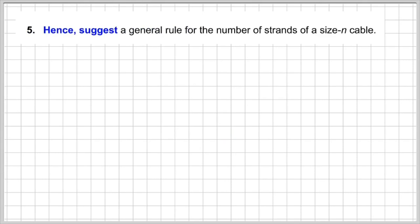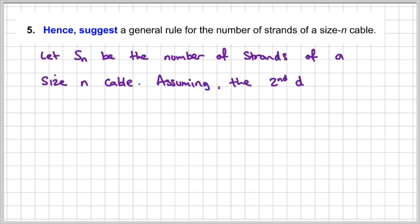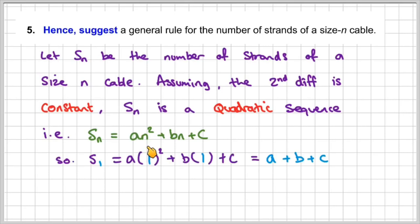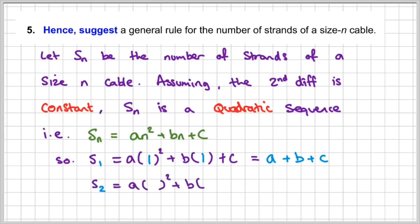Now we have to suggest a general rule for the number of strands of a size n cable. Let sn be the number of strands of a size n cable. Since the second difference is constant, sn is a quadratic sequence. Every quadratic sequence follows the formula an² plus bn plus c — the universal general formula for any quadratic sequence. When n equals 1, substituting gives a plus b plus c. Some of you use the shortcut key: a plus b plus c, 3a plus b, and 2a. I'm showing you how we get to that.